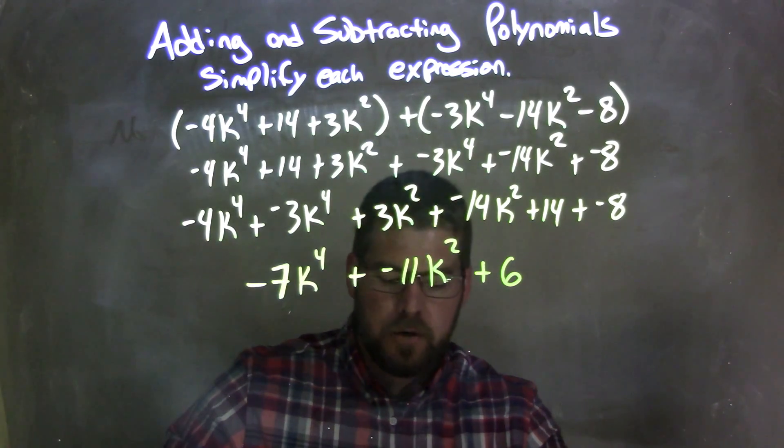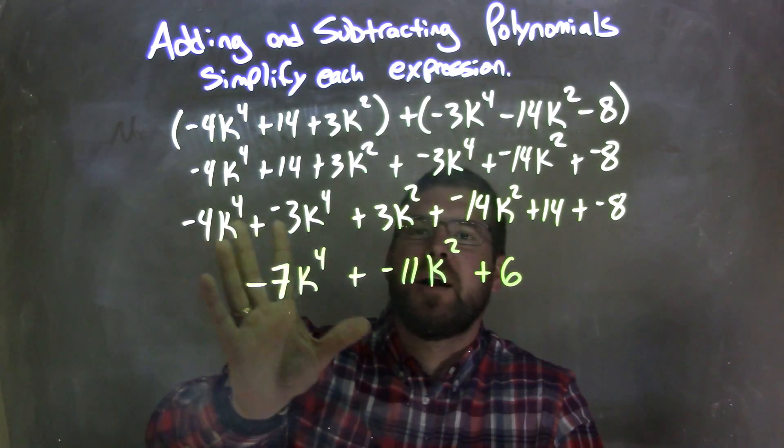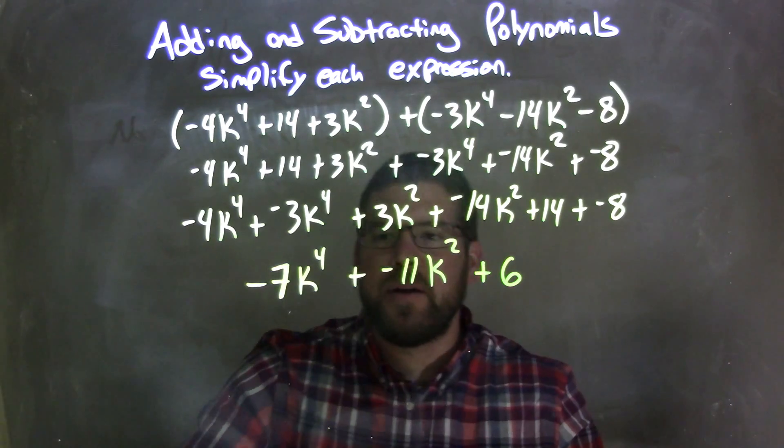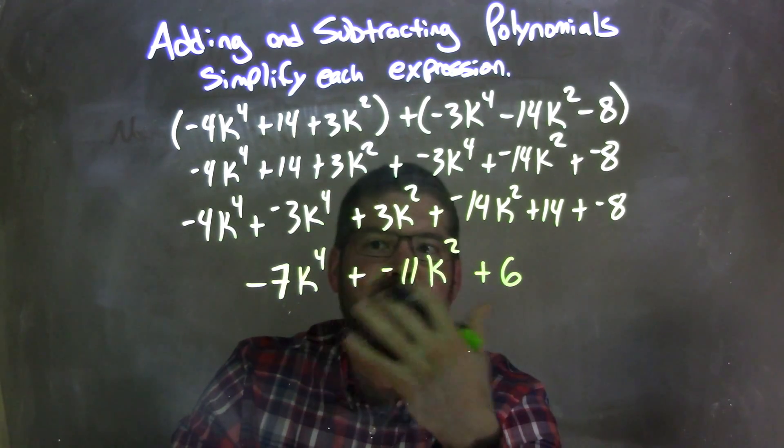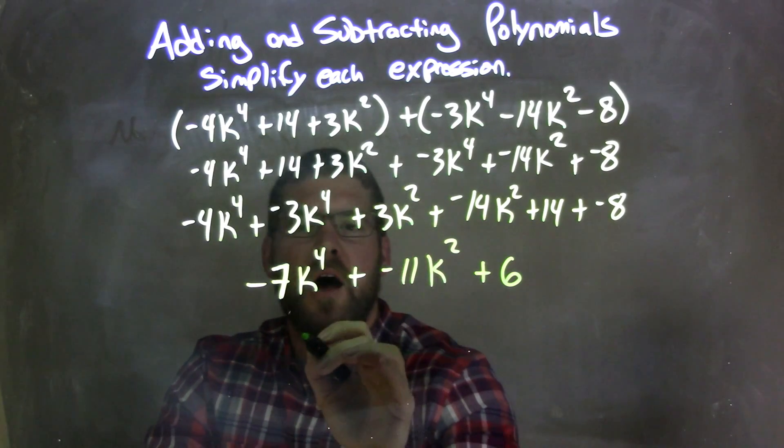So, now we need to simplify this a little bit. I don't really like to have plus a negative as my final answer. It's easier to simplify. So we have negative 7k to the 4th. I'm going to rewrite this to be subtracting 11k squared,